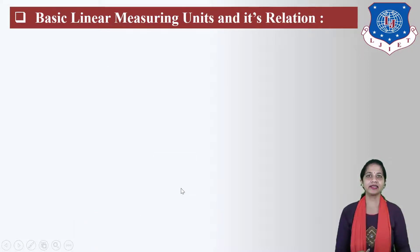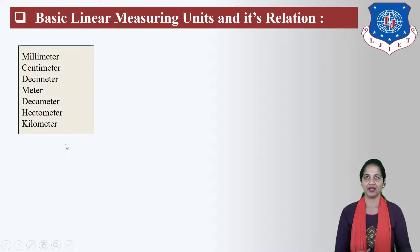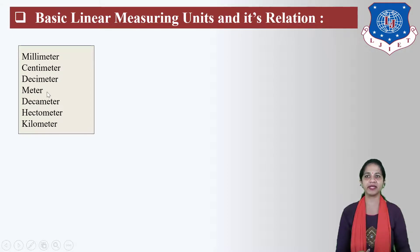Next, let us understand basic linear measuring units and their relation. Linear measuring units are: millimeter, centimeter, decimeter, meter, decameter, hectometer, and kilometer.